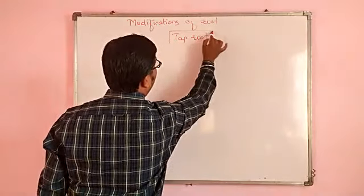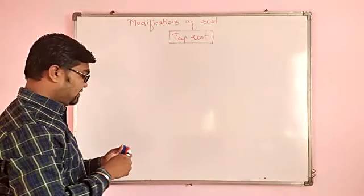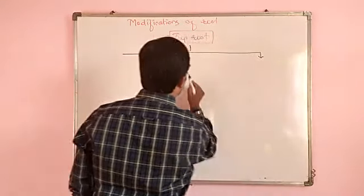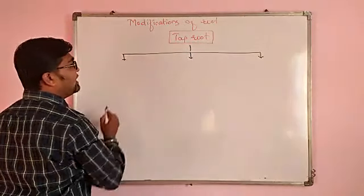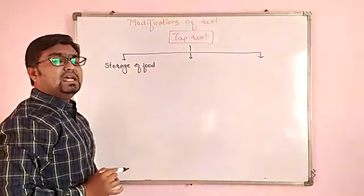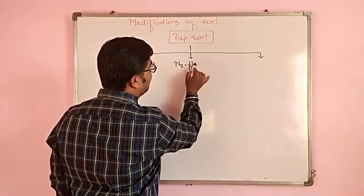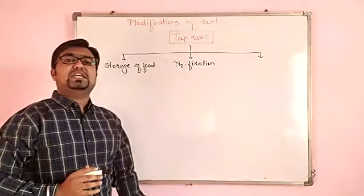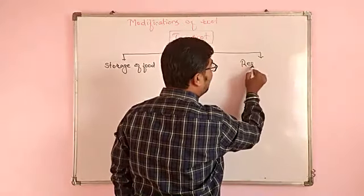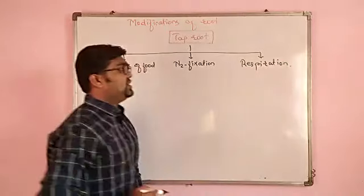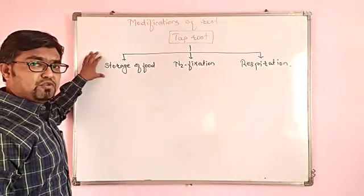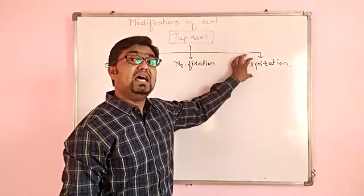So tap roots are modified for three different roles. First is storage of food. Second modification is for nitrogen fixation — some plants' roots have modified for nitrogen fixation, especially in the leguminous family. Third type is for respiration — modification for respiration. So we have three different modifications for tap root: first is storage of food, second is nitrogen fixation, and third is respiration.